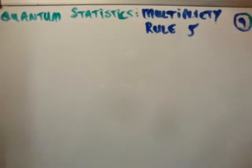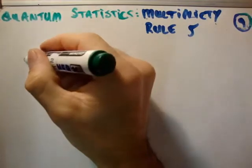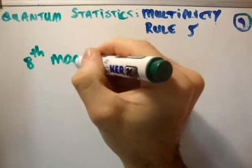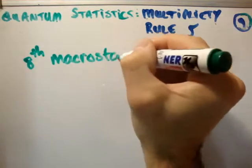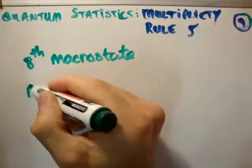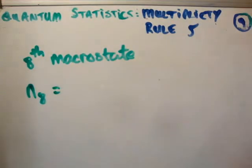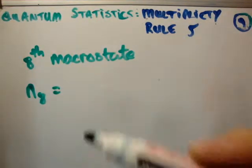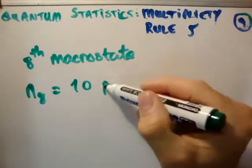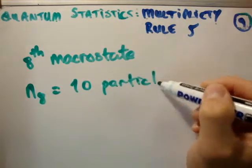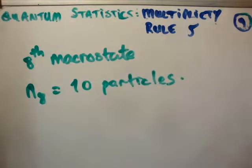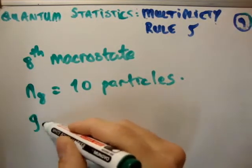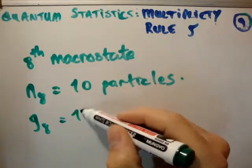So let's look at it. Let's say for example we're looking at the eighth macrostate. So we're talking about n sub 8, that's the number of particles we put into the eighth macrostate, and let's say we put in 10 particles. And in the eighth macrostate, let's say we have 12 microstates.